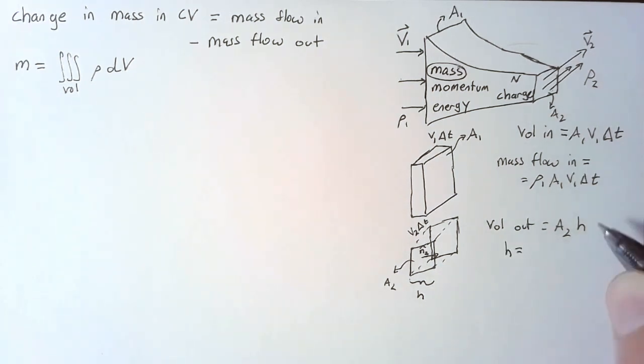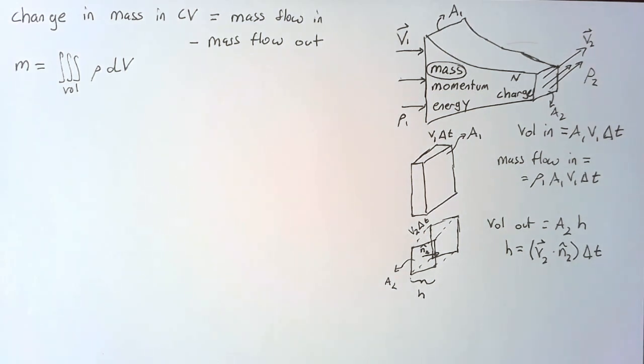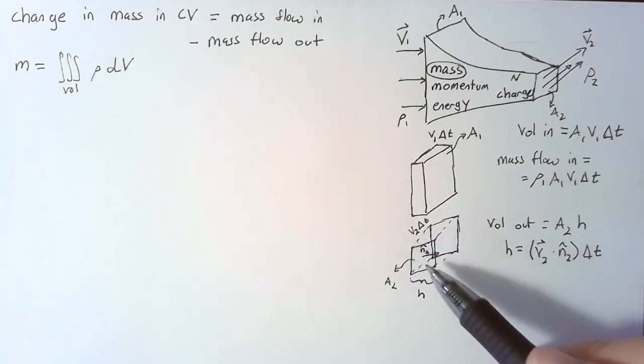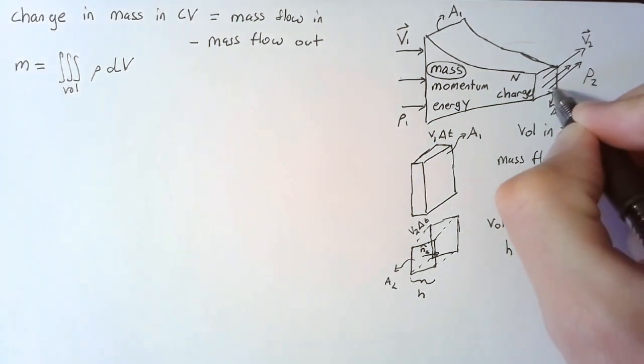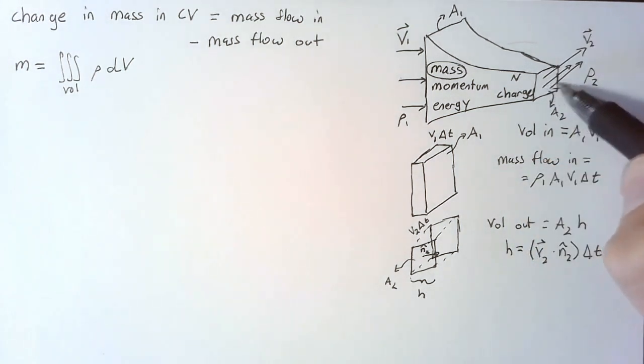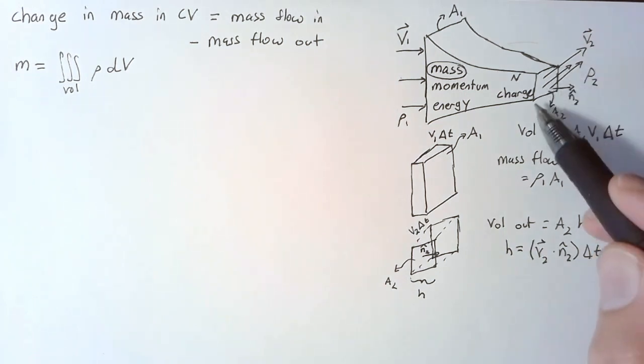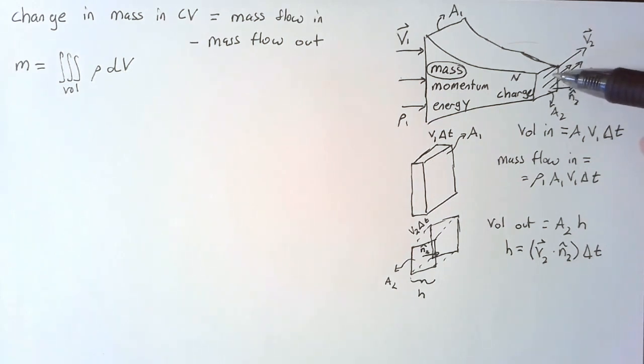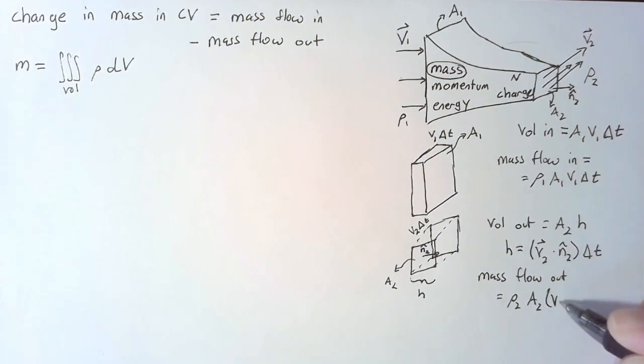Our volume out here is actually a2 multiplied by this h. Now in order to calculate this, we're going to need some vector that defines the normal direction. So our h is going to be not just v2, but a v2 dotted with this normal vector multiplied by our delta t. By using the normal vector, what we're measuring is now no longer just the velocity itself, but we're measuring how much of the velocity is aligned with the surface going out. Looking at it over here, only a portion of the velocity is actually causing fluid to flow out of our control volume. Some amount is just making it move up and down on this surface. v2 dot n2 is accounting for that. Now we can write our mass flow out. This is going to be rho2 a2 v dot n delta t.